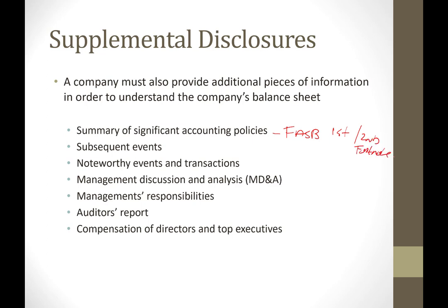Summary of significant accounting policies is usually the first or second footnote that FASB asks for. For example, if you had a question about disclosures regarding tax equivalents — where would you describe what tax equivalents are? That's the kind of thing you put in the first or second footnote as a significant accounting policy. Subsequent events are a required FASB disclosure, and noteworthy transactions and events is also a FASB disclosure.